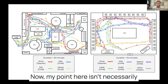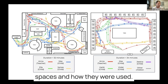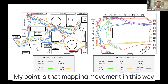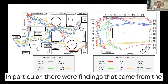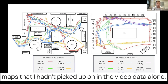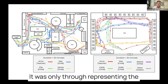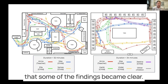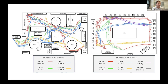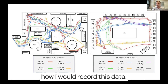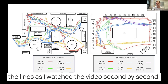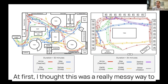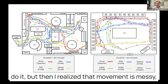My point isn't necessarily about the difference in these two spaces, but that mapping movement in this way has huge affordances for how we analyze data and understand classroom spaces. There were findings that came from the maps that I hadn't picked up on in the video data alone — it was only through representing the movement on the maps that some findings became clear. I used a stylus on an iPad and recorded the lines as I watched the video second by second. At first I thought this was a messy way to do it, but then I realized that movement is messy, and capturing the data this way shows part of that entanglement.